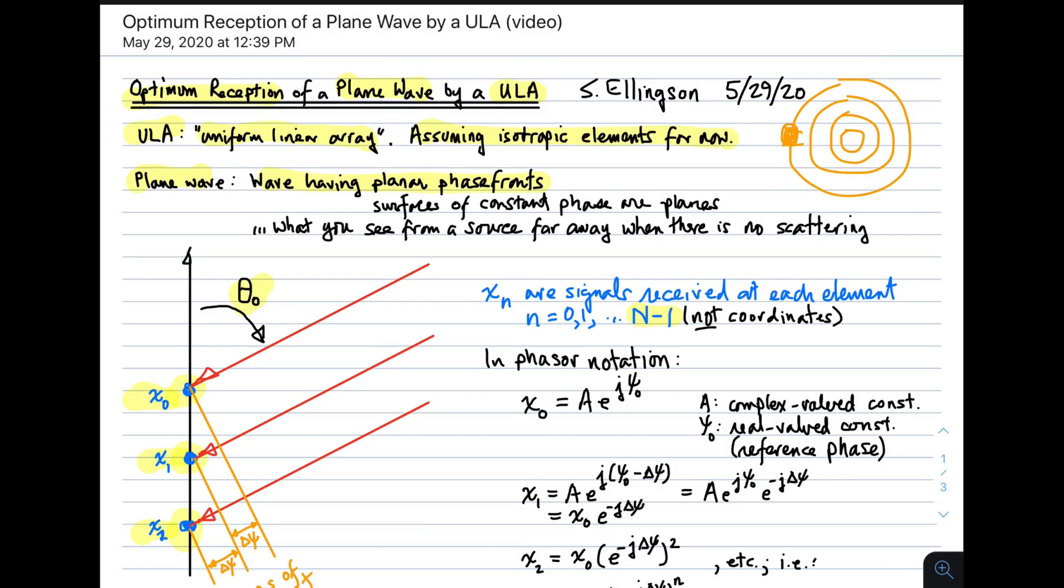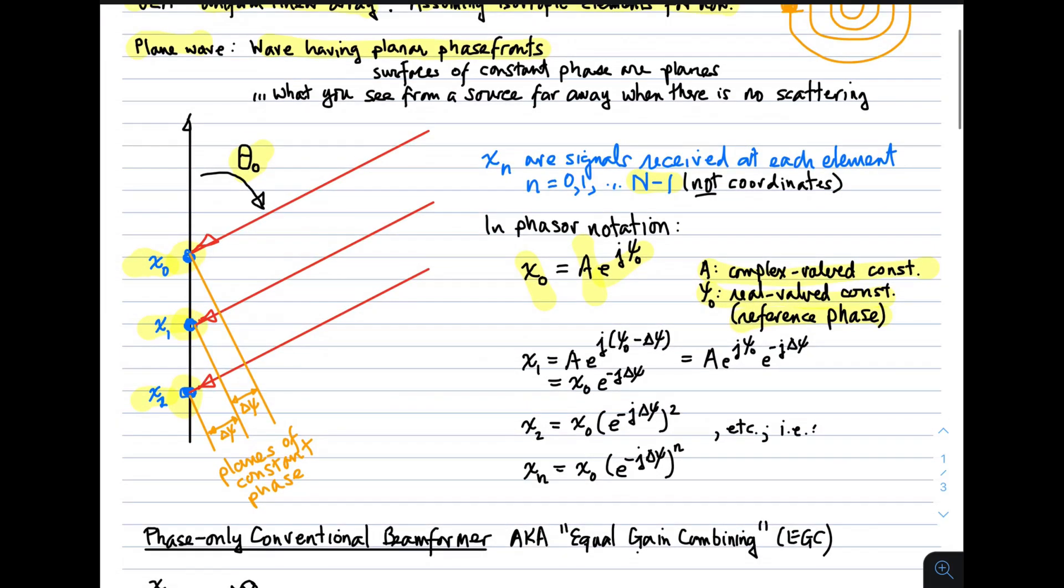And we can now easily write expressions for the signals that arrive at each sensor, each element. For example, x0 we can write as A, which is some complex valued constant, times e to the j psi 0, where psi 0 is a real valued constant, and I may refer to that as a reference phase. So what A and psi 0 are not exactly important at the moment, and you'll see why. When I write the expression for x sub 1, well, that's just going to be A, the magnitude phase of that wave that's arriving. Now for the signal arriving at the first sensor, x sub 1, the only thing that's going to be different is the phase of that wave. And it's going to be different by an amount delta psi, where delta psi has to do with this projected distance. To get to sensor 1, we have to travel this additional distance. And we'll call that additional electrical distance, that is how many radians of phase, delta psi.